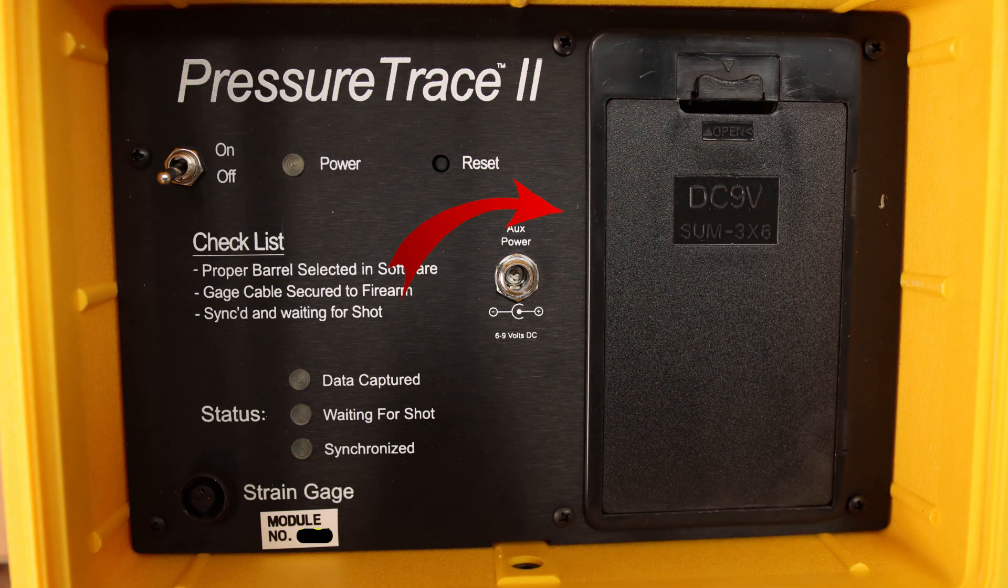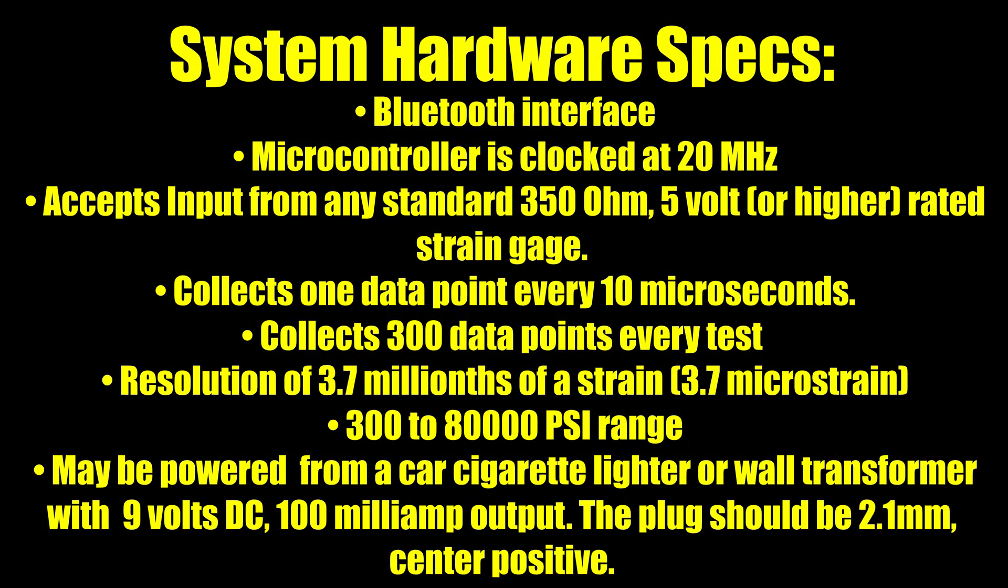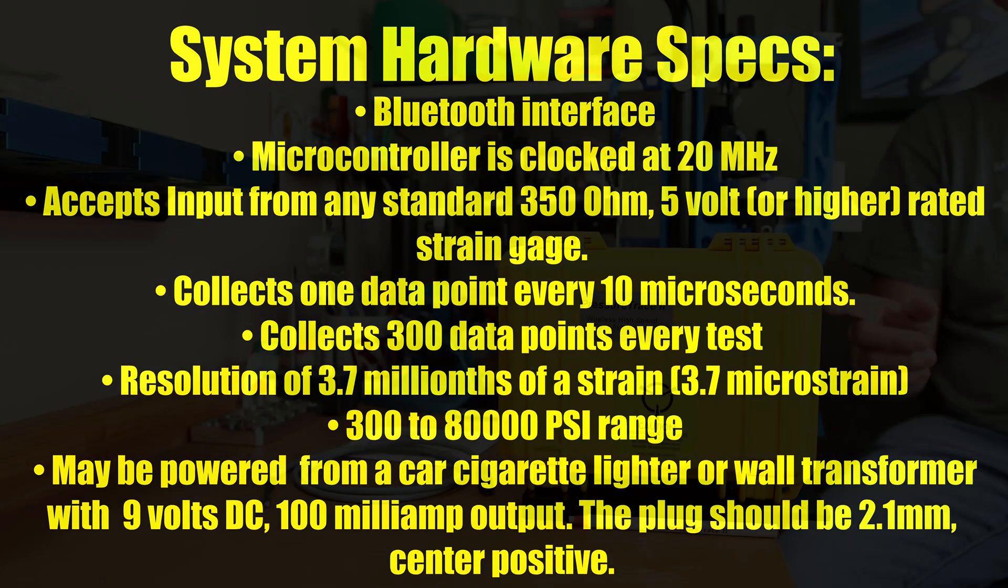Personally, I would just power it with the AA batteries that it's capable of, but the directions say that it can accept a cigarette lighter or a power point from a wall transformer that's 9 volt DC. But make sure you pay attention to your polarity.